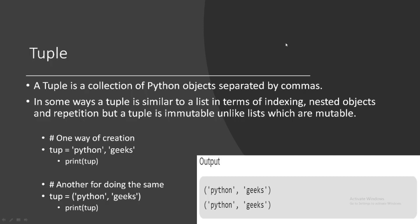Another popular collection in Python is the tuple. In a tuple, objects are separated by commas. A tuple is similar to a list in terms of indexing, nested objects, and repetition, but there is one key difference: a tuple is immutable while a list is mutable. Once a tuple is created, you cannot change its elements. You can create a tuple like: tup = ('python', 'geeks'), or using parentheses: tup = ('python', 'geeks').